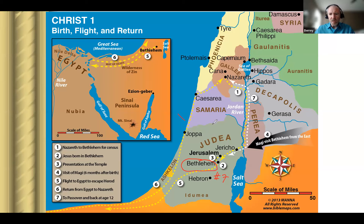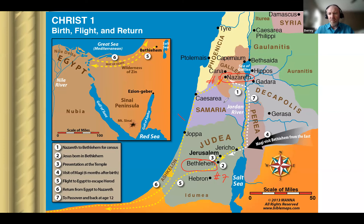Number eight takes us up into the area of Galilee: Nazareth. Nazareth is the place where Jesus grew up. He was born in Bethlehem, but his parents moved to Nazareth, and that's where he grew up, being known as a Nazarene. As you can see, Nazareth is in the region or province of Galilee.